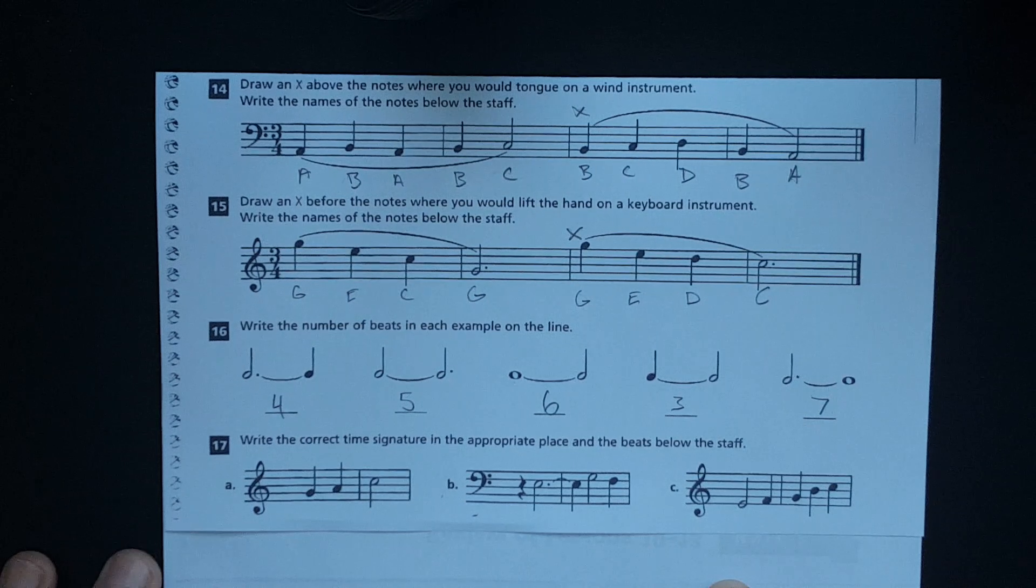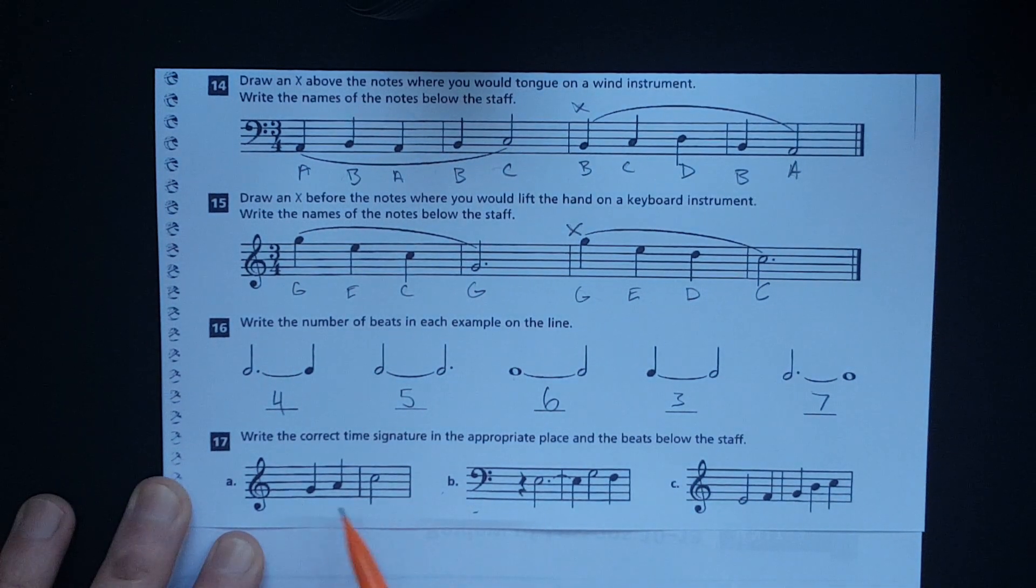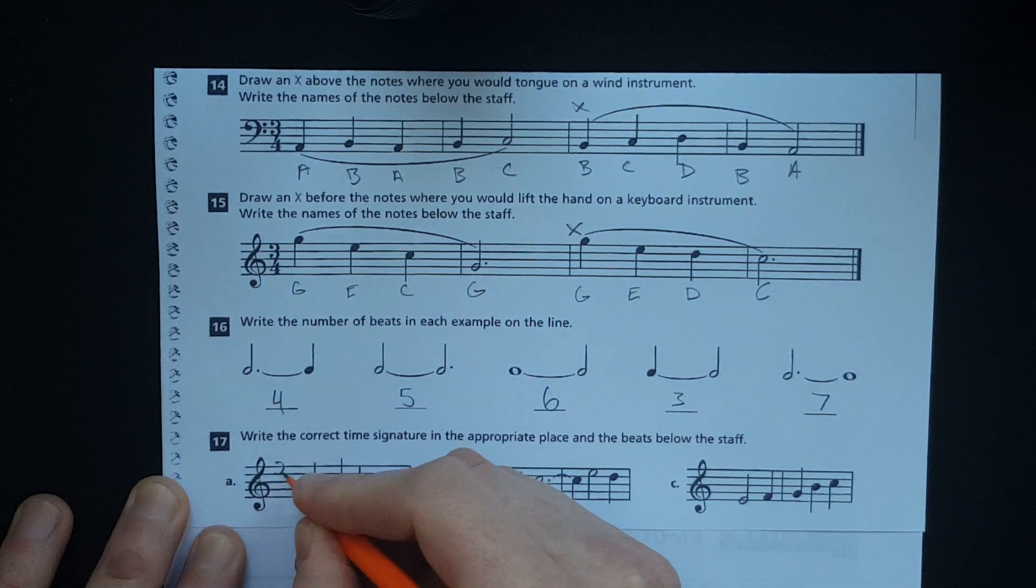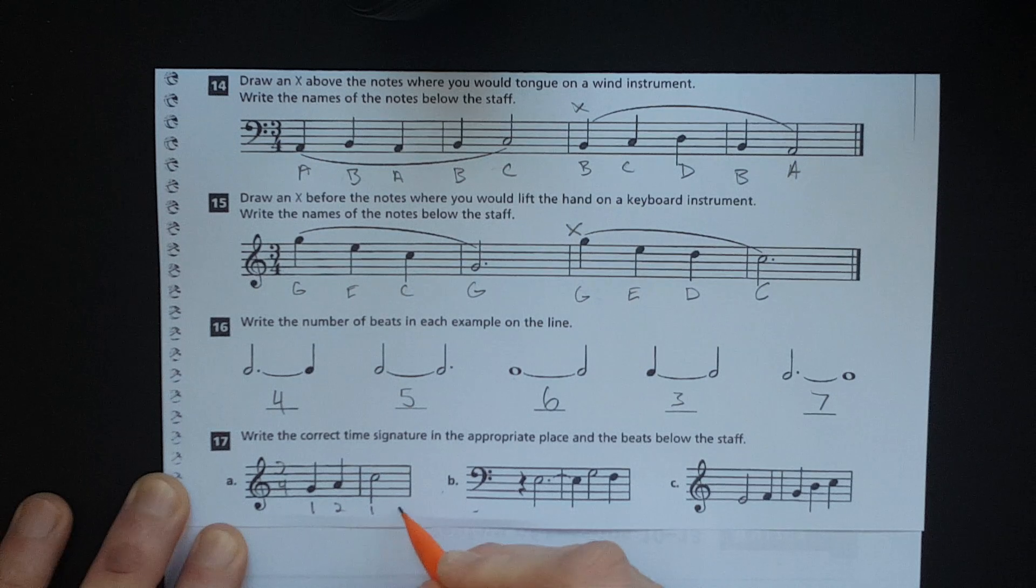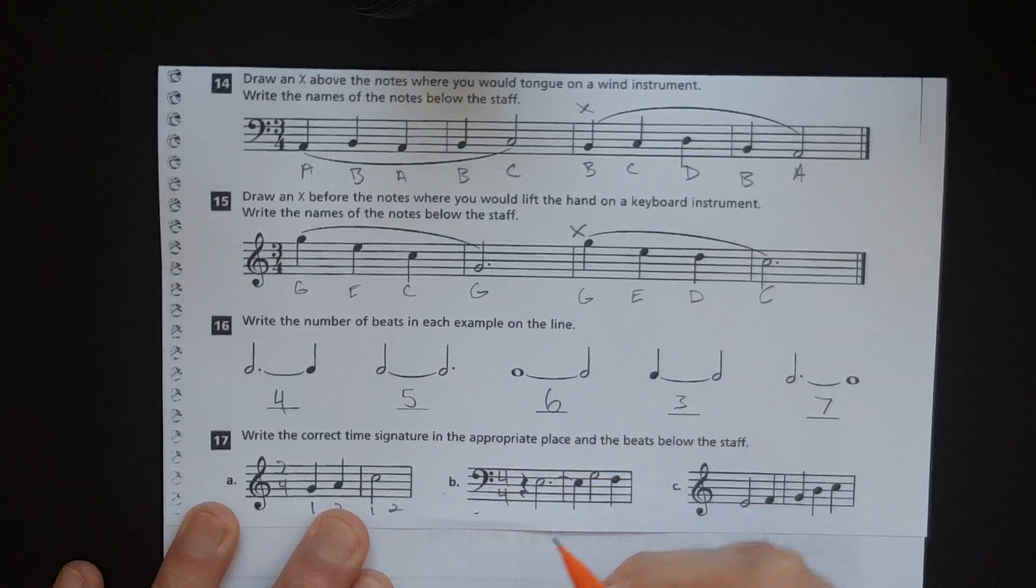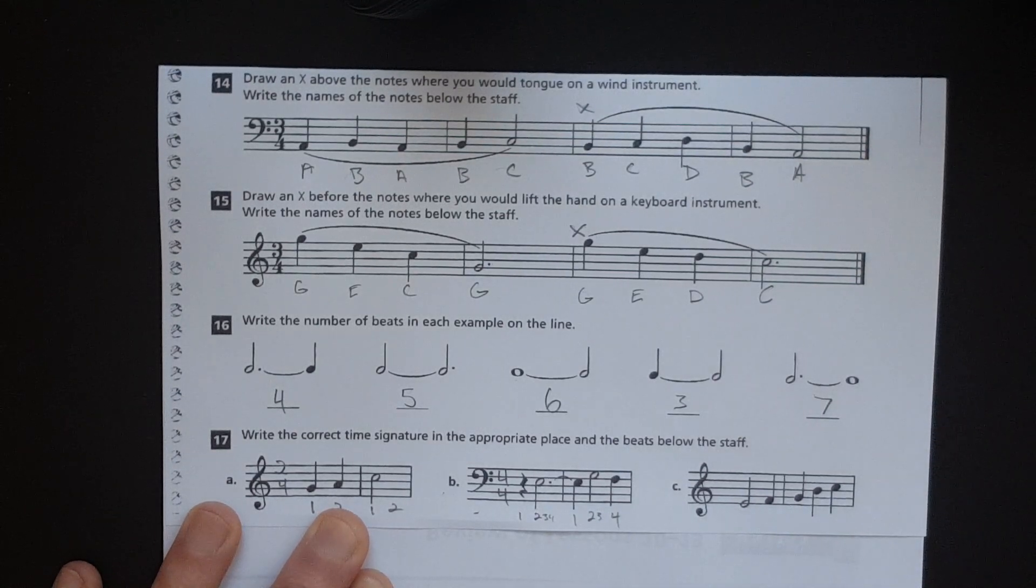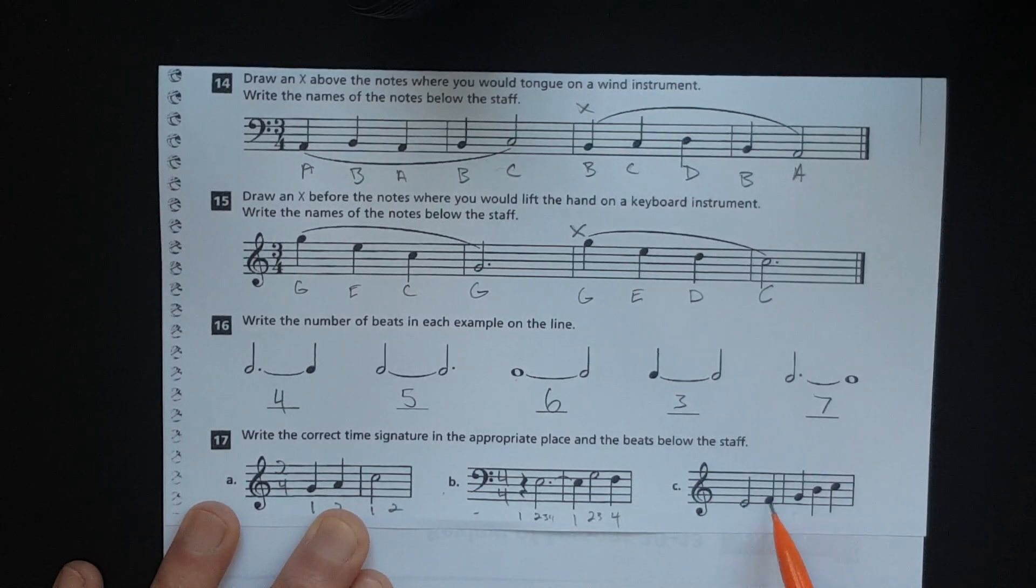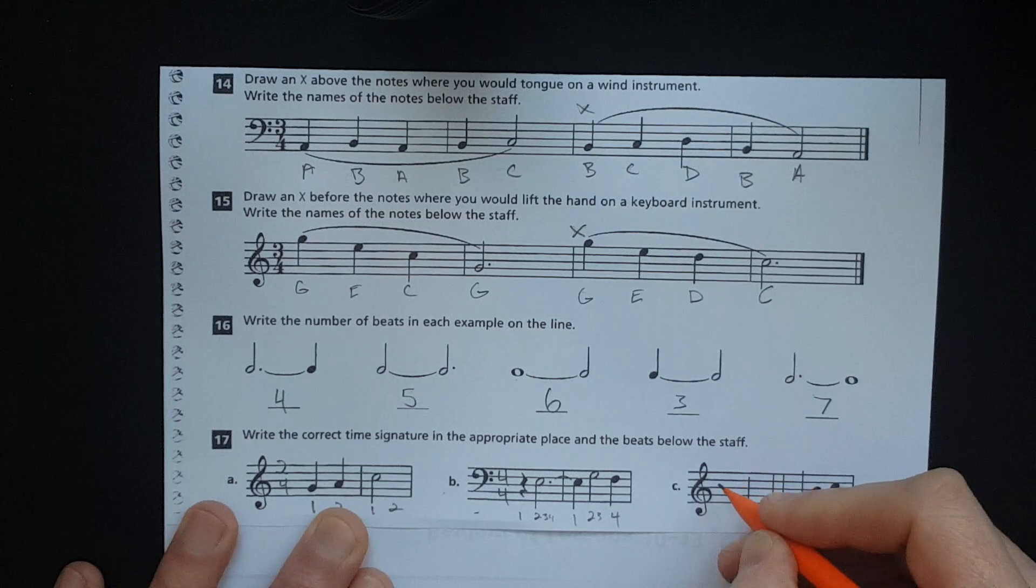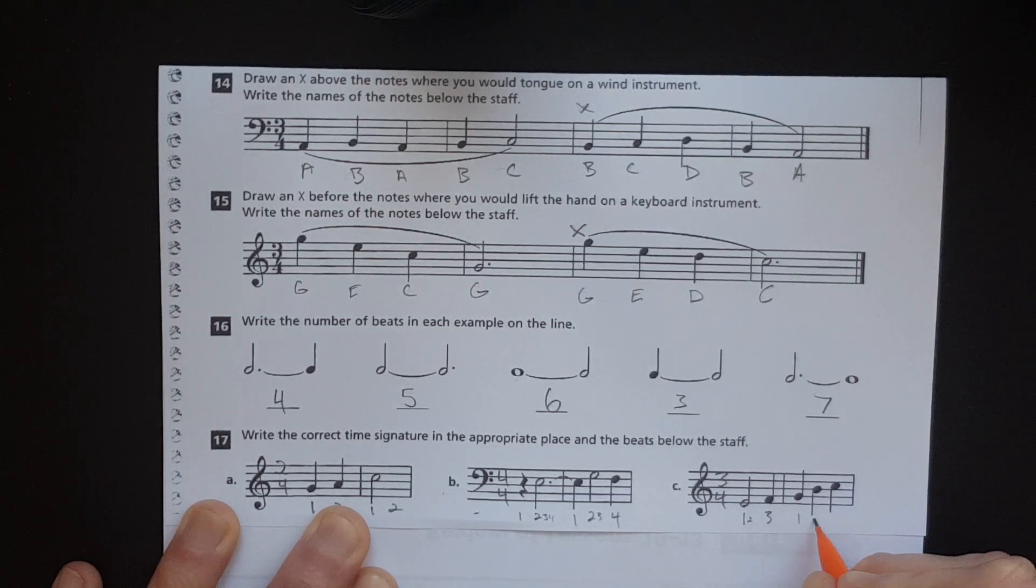And then, for number 17, write the correct time signature in the appropriate place and the beats below the staff. Okay. So, here we go. Just, I mean, there's two beats here. There's two beats here. So, that's got to be two, four. And then just go ahead and write the counting. Two, one, two, below the staff as they ask. Alright. So, here, let's see. You've got one, two, three, four beats here. And one, two, three, four beats there. So, that's got to be four, four. And write the beats in. So, one, two, three, four. And then one, two, three, four. Alright. This one, I'm guessing it's going to be three, four because it's the only one left. But here we go. One, two beats, three. Three beats in that measure. And one, two, three beats in that measure. So, yes. This is definitely going to be our three, four measure. And go ahead and write the counting in. One, two, three. One, two, three.